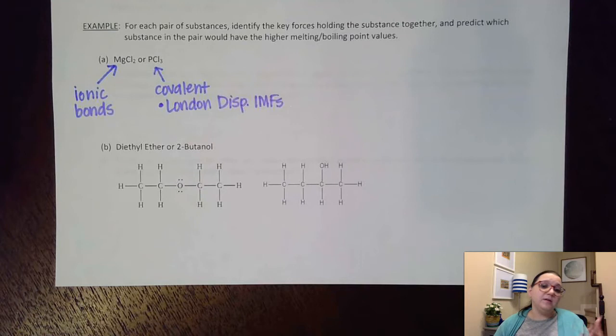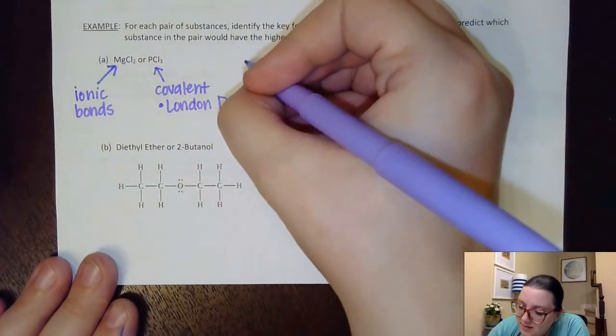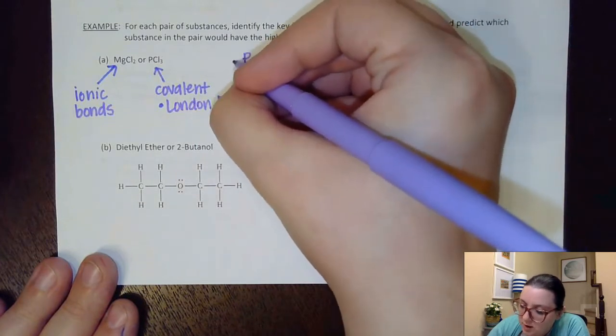If it's nonpolar, then London dispersion is your only type. If it's polar, then I would have dipole-dipole, and even possibly also hydrogen bonding. So I need to draw this out really quick to figure out what's going on here.